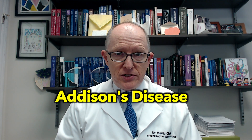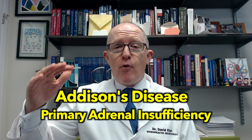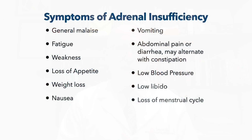When this gets really bad, we can call this Addison's disease or primary adrenal insufficiency. The problem is we have so little cortisol that we start to have a lot of serious symptoms, such as general malaise, fatigue, weakness, loss of appetite, weight loss, nausea, vomiting, abdominal pain, low blood pressure, low libido, and loss of menstrual cycle. If you asked someone what are the symptoms of adrenal fatigue, they might say some of that, but real adrenal insufficiency involves these things very prominently and seriously — because you have low cortisol.